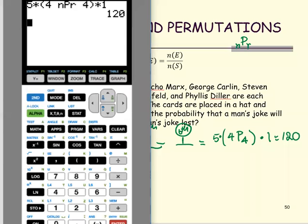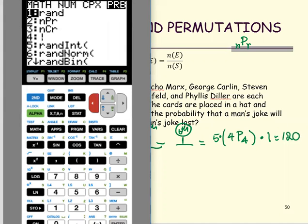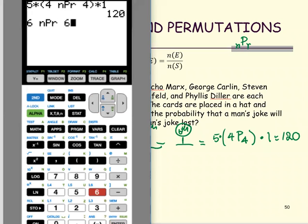It's going to be six, math, PRB, nPr, which is the probability of the n selecting r, and enter the number six. We get number 720.